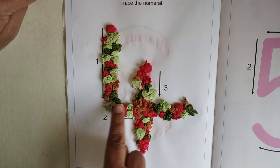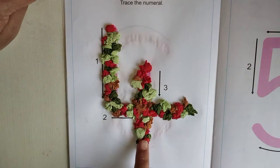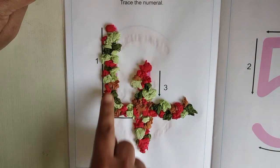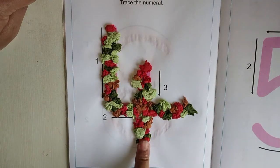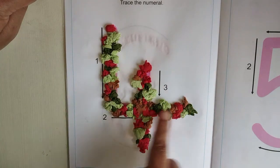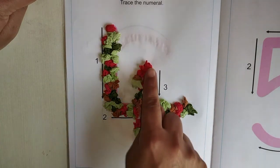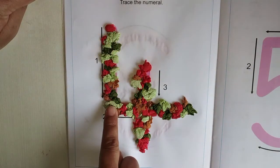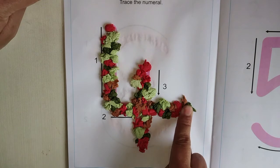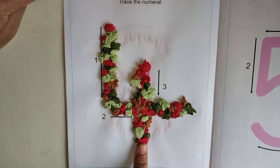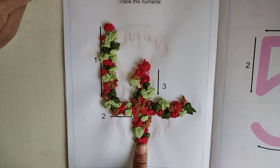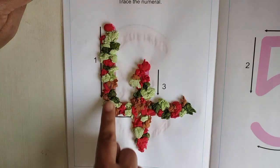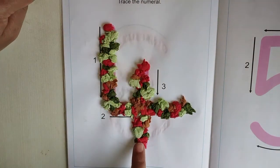One more time, children. 4. 4. No one is going to do like this. Okay. You are going to start from here, down, sleeping line and then standing line. One more time. 4.